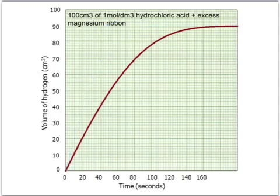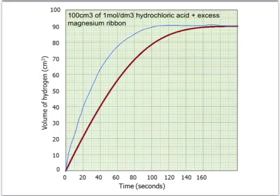What about if we were to do it with the same volume of the same concentration of hydrochloric acid but at a higher temperature? The increased temperature should increase the collision rate and also the collision energy, making the reaction faster. So we'll have a faster reaction and it should probably be over quicker, but again we'll get the same volume of gas because we've got the same number of moles of hydrochloric acid being used.